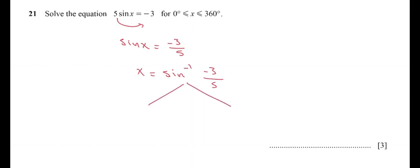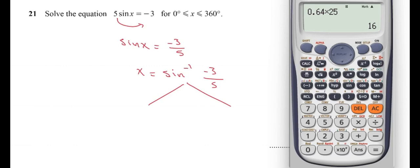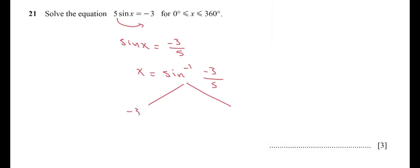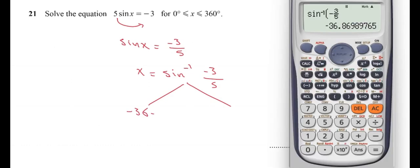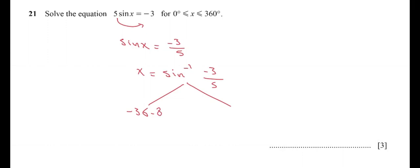Now we have two solutions. Using the calculator to find them: shift, sin, -3/5 equals -36.87°. The other answer is 180° minus this value. When solving an equation with the sine function, there are two solutions.